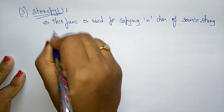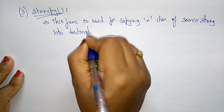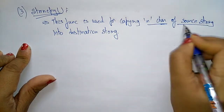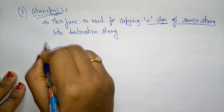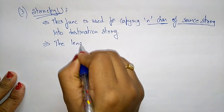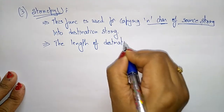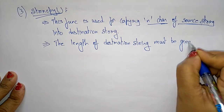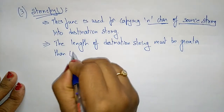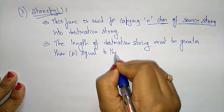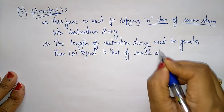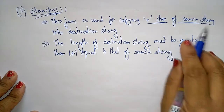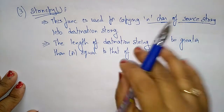We copy n characters of source string into the destination string, so it's not copying the complete source string to the destination — only n characters of source string into destination string. You have to remember that the length of the destination string must be greater than or equal to that of the source string. n copy means only the n mentioned characters will be copied from source string into destination string.